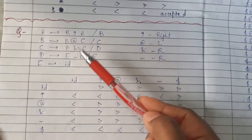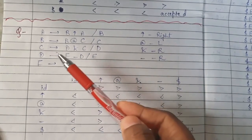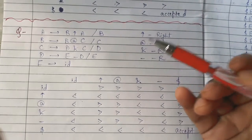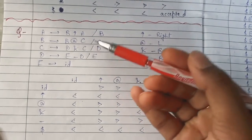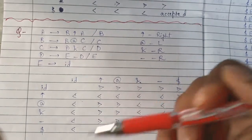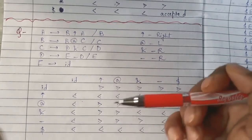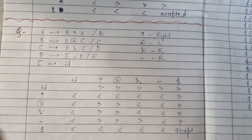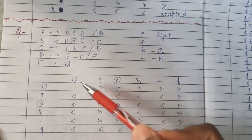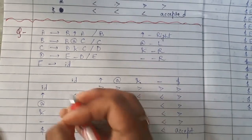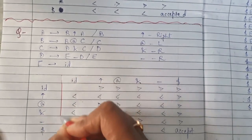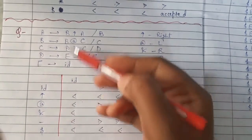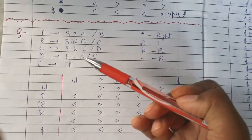So let's say this is the grammar given to us and we have to parse it with the help of an operator precedence table. As the name itself indicates — operator precedence — we are going to give more priority to the operators. To make the table, horizontally and vertically I have to write all the operators that are present in my grammar.